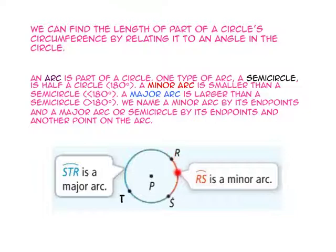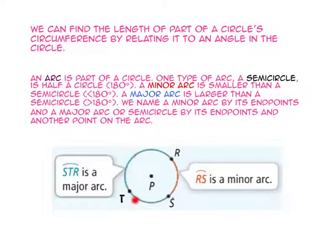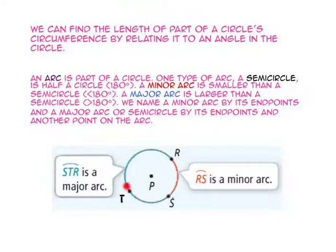We can find the length of part of a circle's circumference by relating it to an angle in the circle. An arc is part of a circle. One type of arc, a semicircle, is half a circle or 180 degrees. A minor arc is smaller than a semicircle or less than 180 degrees. A major arc is larger than a semicircle or greater than 180 degrees. We name a minor arc by its endpoints — this minor arc is called arc RS, or arc SR. We name a major arc or a semicircle by its endpoints and one other point on the arc, such as major arc STR or RTS.